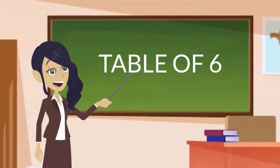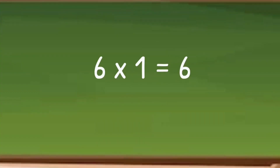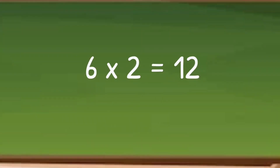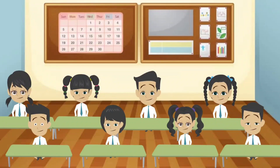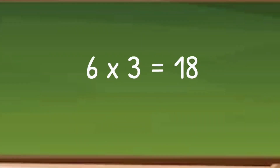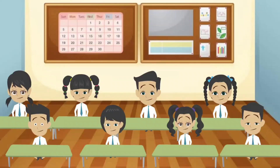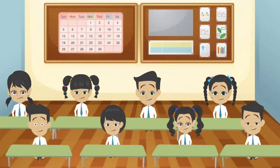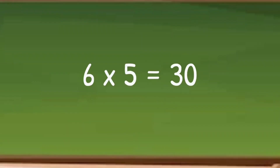Let's Learn Table of Six. 6 1s are 6. 6 1s are 6. 6 2s are 12. 6 2s are 12. 6 3s are 18. 6 3s are 18. 6 4s are 24. 6 4s are 24. 6 5s are 30.